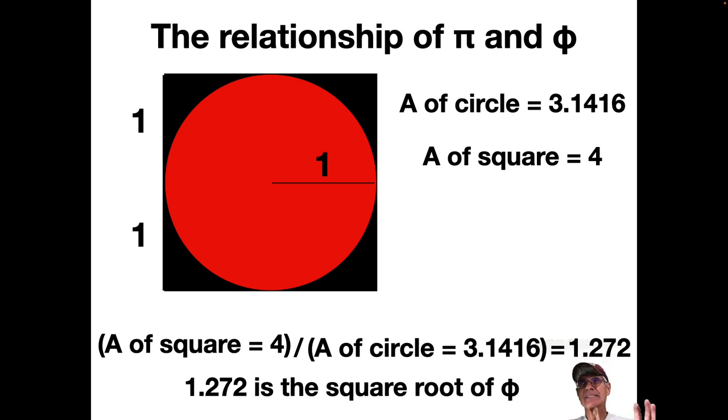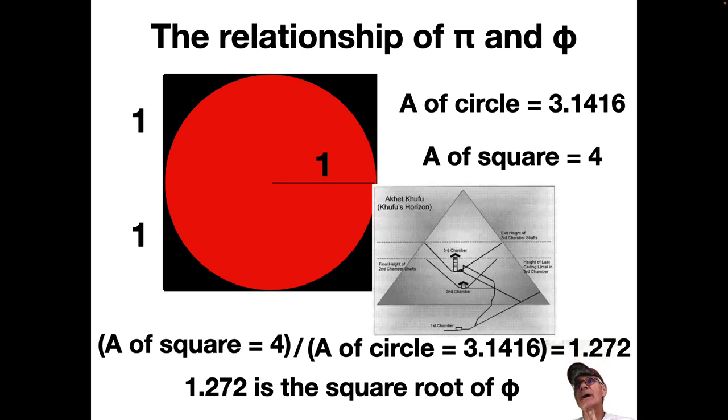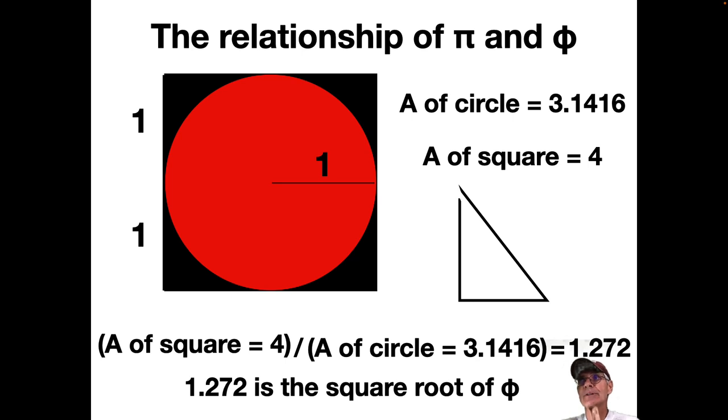So you've got Pi, obviously, because this is a circle, you've got the Pi there. But now you have built into this square and the circle, the square root of Phi. And let's be reminded, if you take the Great Pyramid here, and let's look at just that half of it right there.